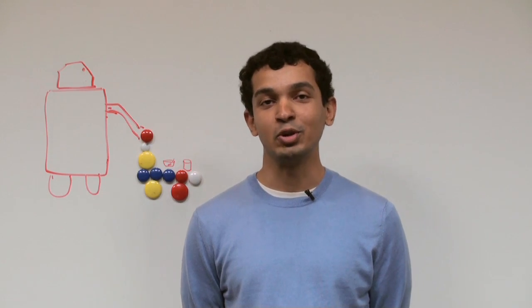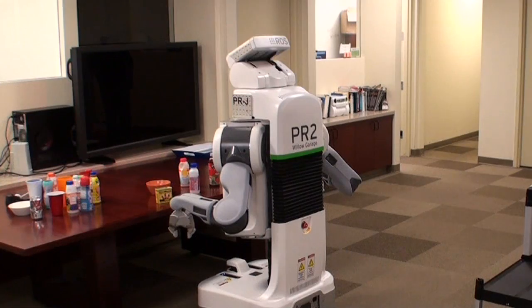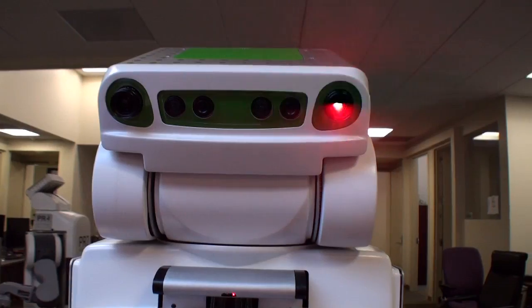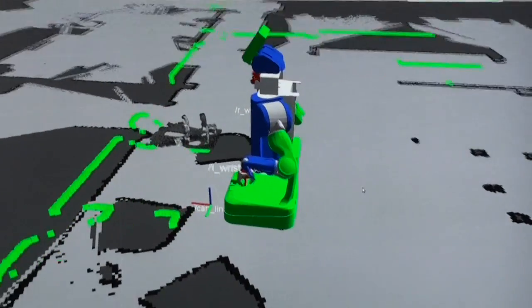We used a human-in-the-loop approach to solve the perception problem. When the robot reaches a table, it takes an image of the scene and sends it to a human operator, who could be remote.